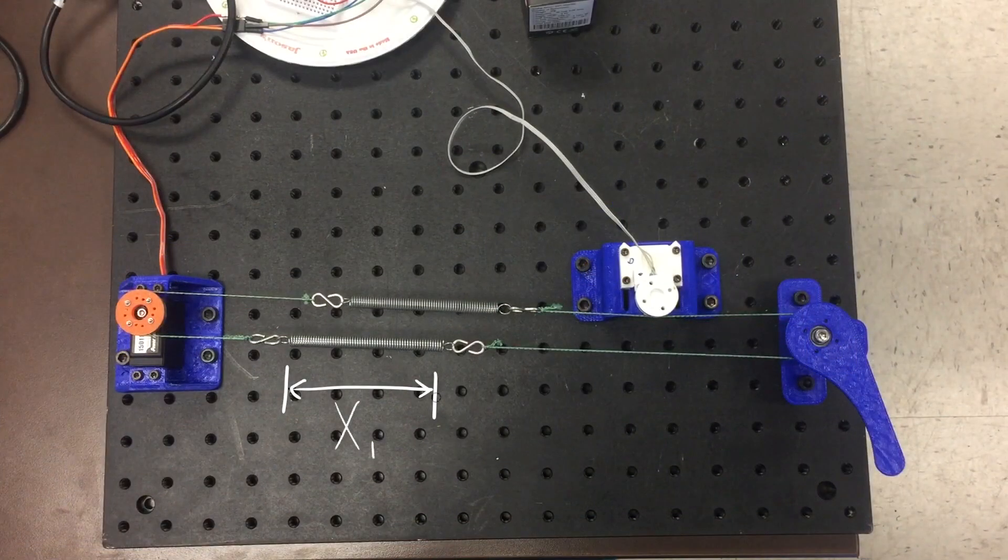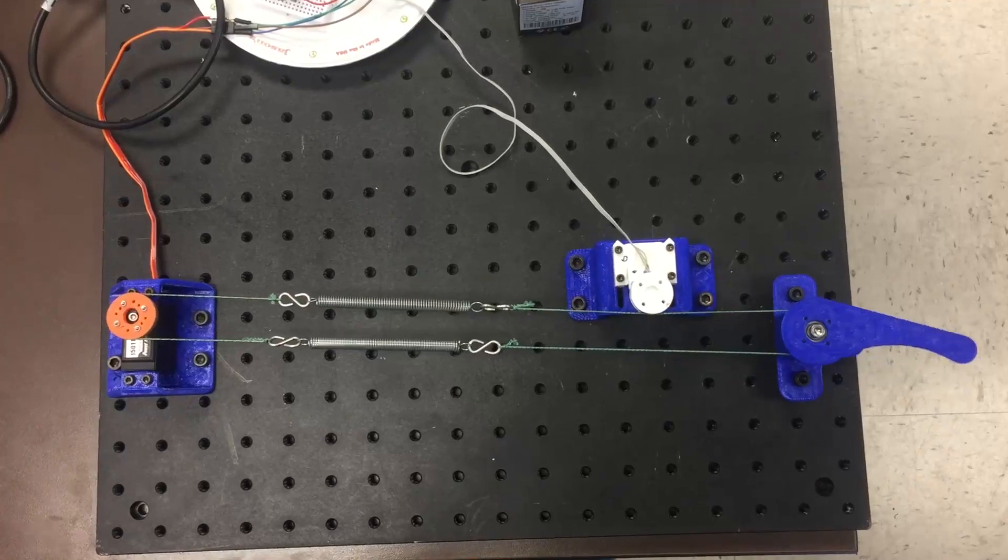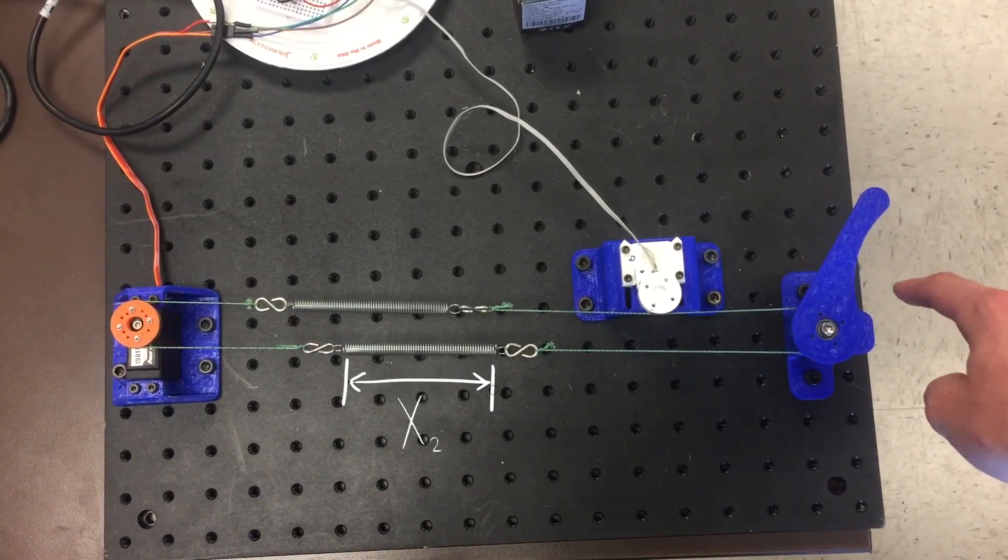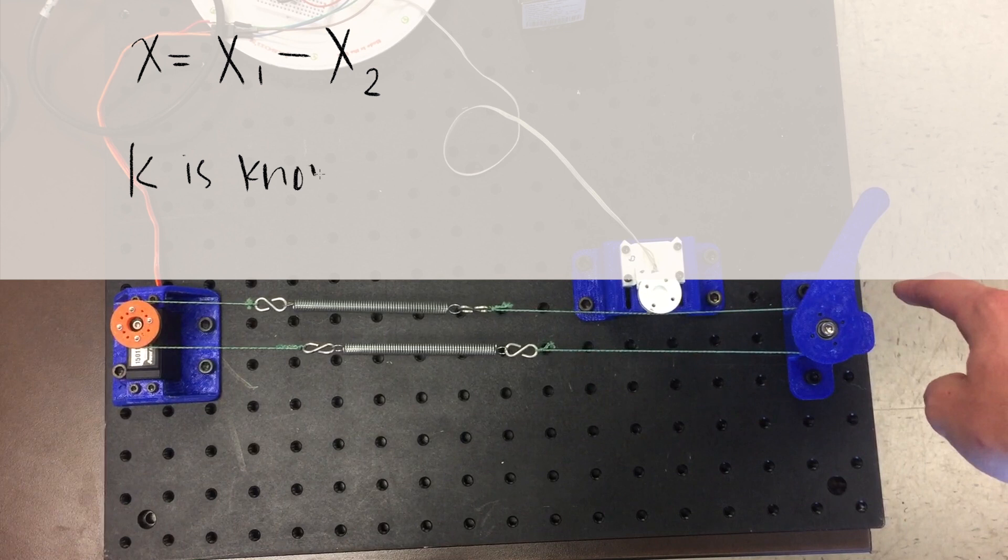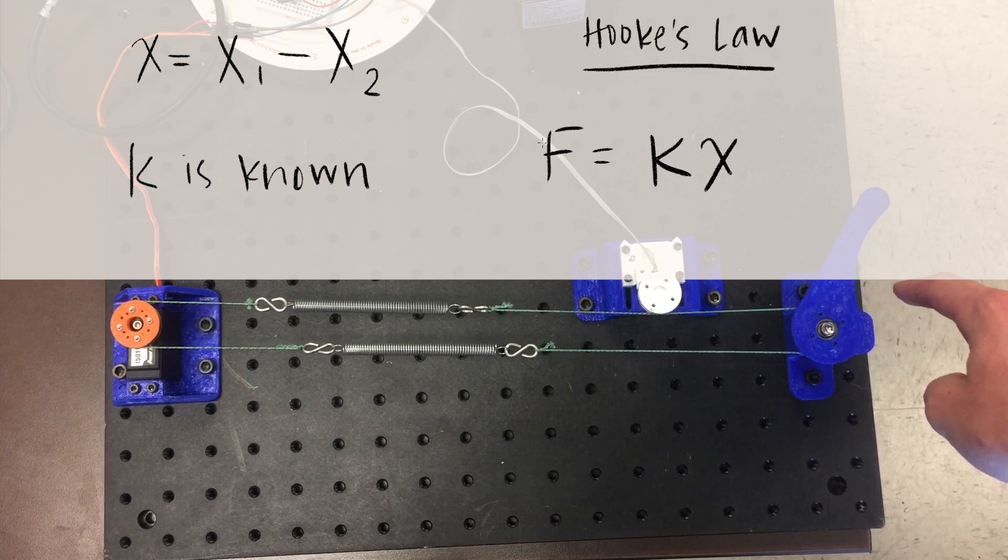After accurately measuring the deflection of the elastic element with a known spring rate, we can use Hooke's law, F equals kx, to determine the force being applied by the actuator on the load. This means that the force is directly controlled by the motor rotation and the spring constant used.